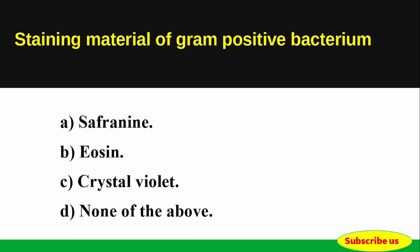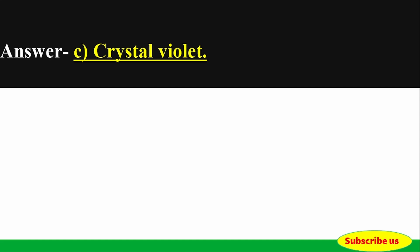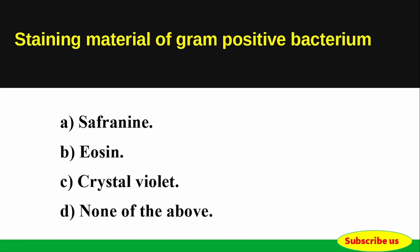Question: The staining material of Gram positive bacterium — Options: A) Saffron, B) Eosin, C) Crystal Violet, D) None of the above. Correct answer: Option C — Crystal Violet. The staining material of Gram positive bacterium is Crystal Violet.